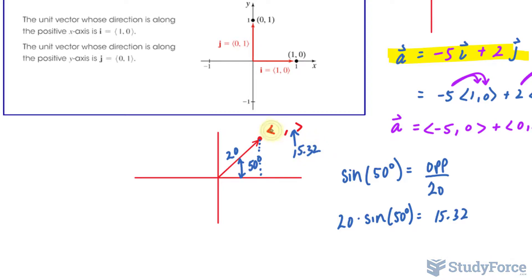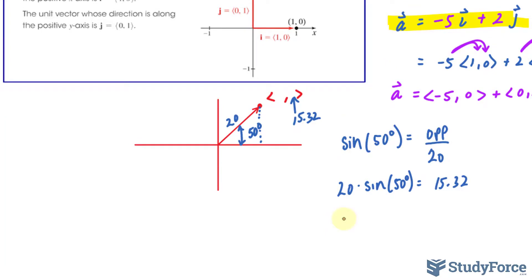To find this one, we do the same thing, except we use cosine. So cos(50°)·20 gives us the adjacent, this side.